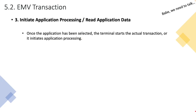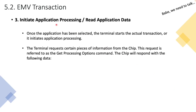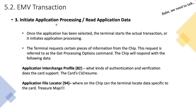The terminal requests certain pieces of information from the chip. This request is referred to as the GET PROCESSING OPTIONS command. The chip will respond with the following data: it will supply the terminal with the Application Interchange Profile, tag 82. We've covered AIP in the EMV issuing section previously. Basically, the Application Interchange Profile is the CV of the card — it tells the terminal what kind of authentication and verification is supported by the card.